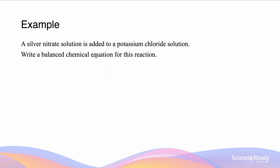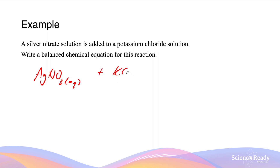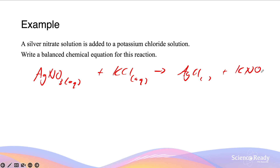In this example, silver nitrate is added to potassium chloride solution. First we can write our equation for this ion exchange reaction: silver nitrate AgNO3 (aqueous) is reacted with potassium chloride KCl (aqueous) to form AgCl plus KNO3. We are unsure about the states of silver chloride and potassium nitrate, so we apply the rules: all nitrates are soluble, meaning potassium nitrate is aqueous. Furthermore, all halides including chlorine and bromine are soluble except for silver halides, meaning AgCl must be solid.